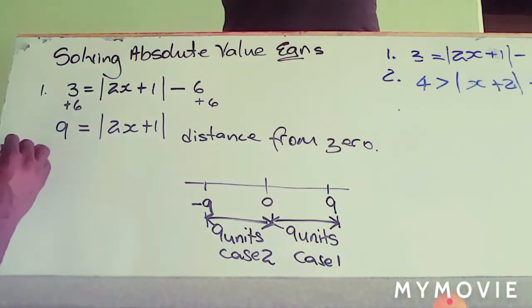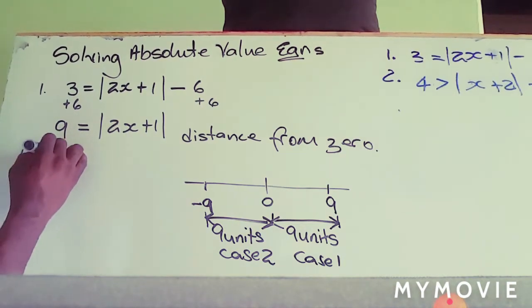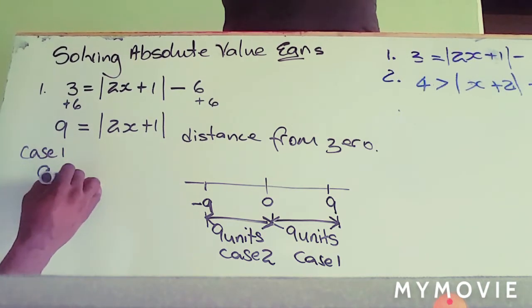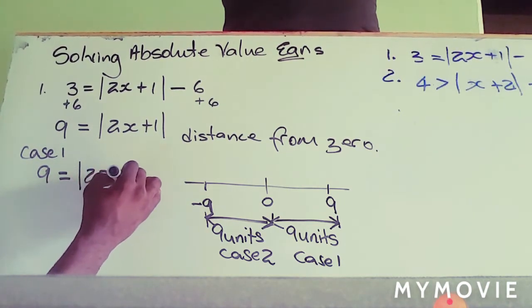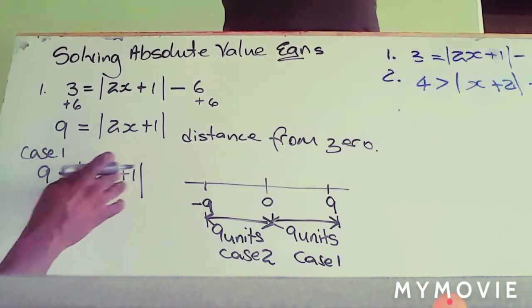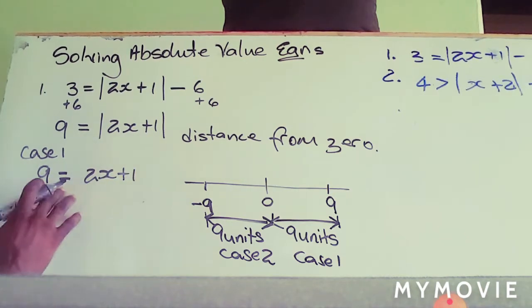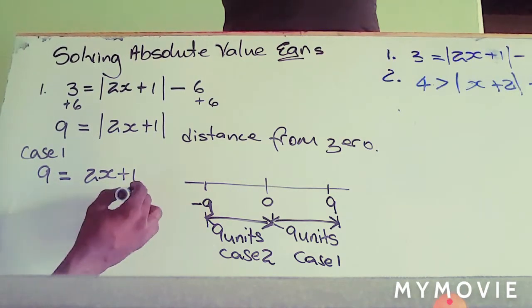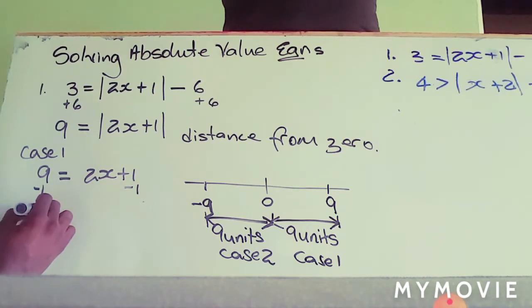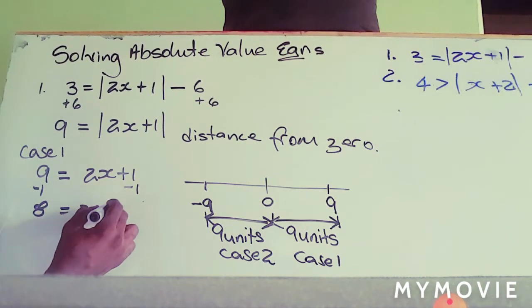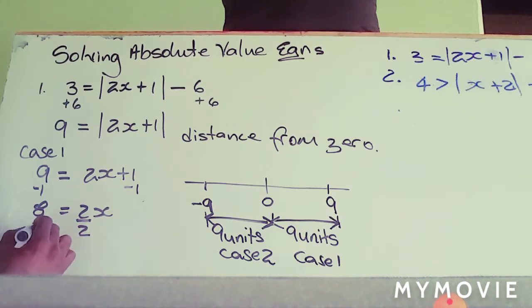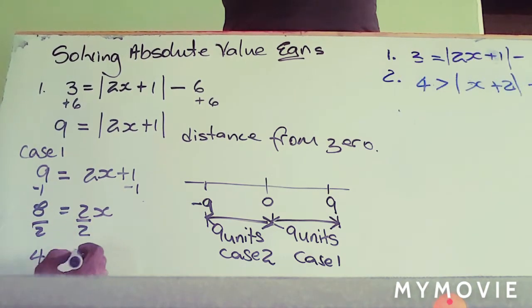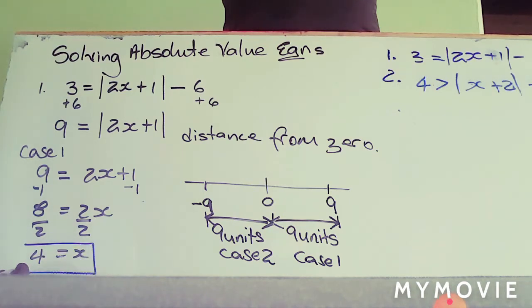In case one, we have nine equal to the absolute value of two x plus one. At this point we can remove the absolute value sign and solve for x. We subtract one from both sides, so eight is equal to two x. Dividing both sides by two, four is equal to x. So x equals four is one of our solutions.